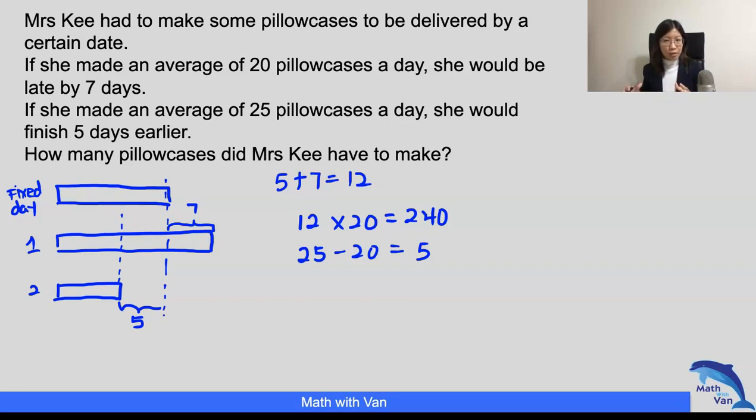So the 240 pillowcases had already been done in scenario two because she made five pillowcases more each day. So how many days did it take to close the gap of 240? We can take 240 divided by five, because five means per day. So how many days does she need to make up for this 240? And that is 48 days. So it means that she took 48 days in scenario two.